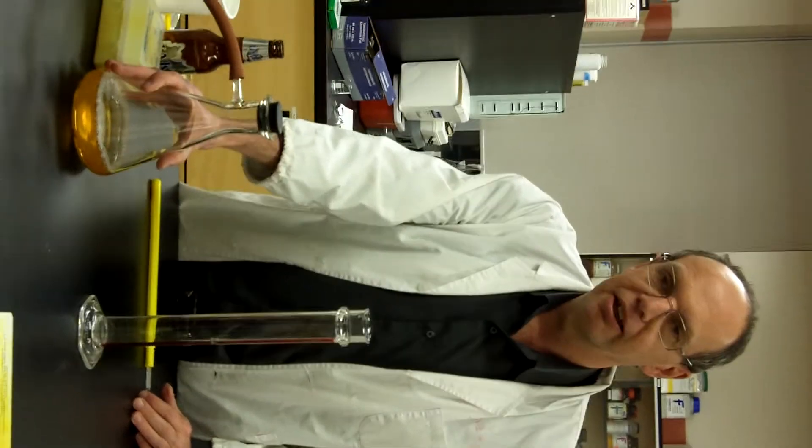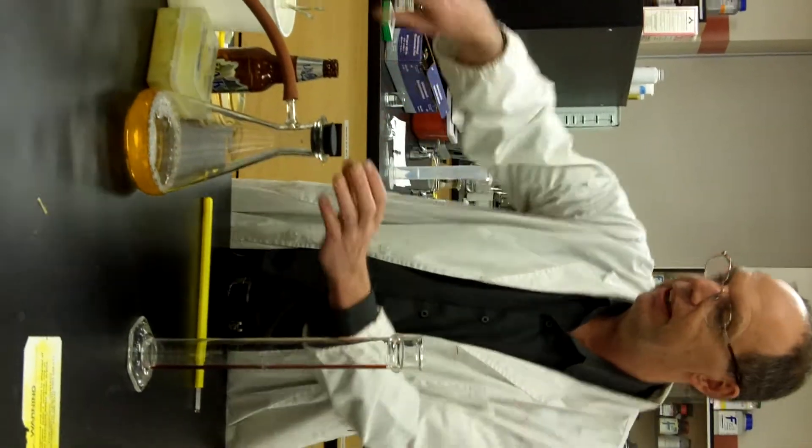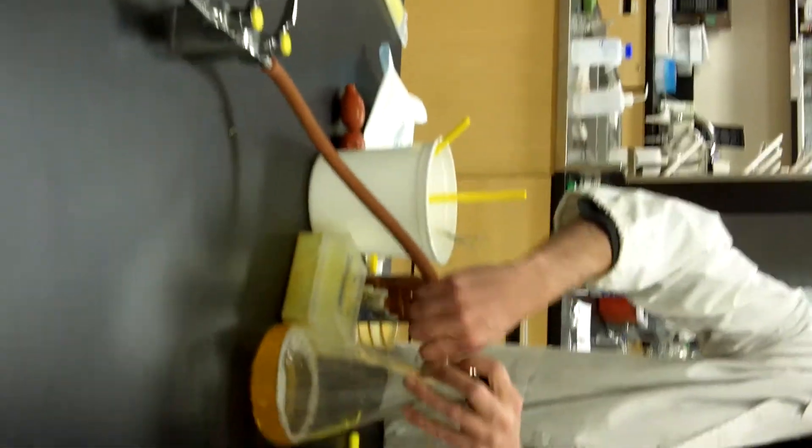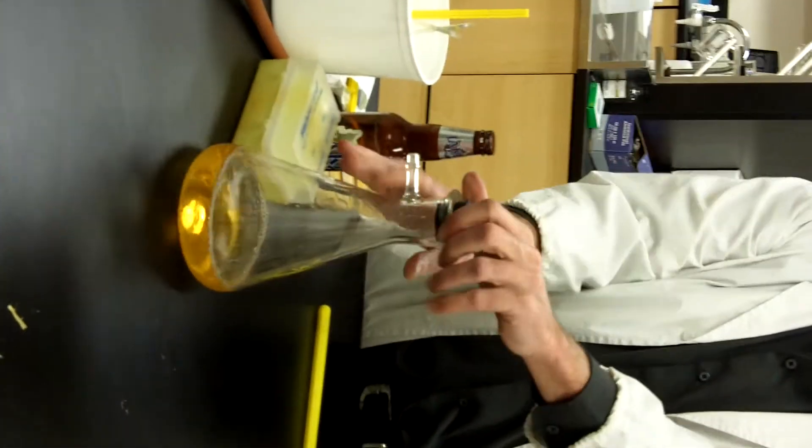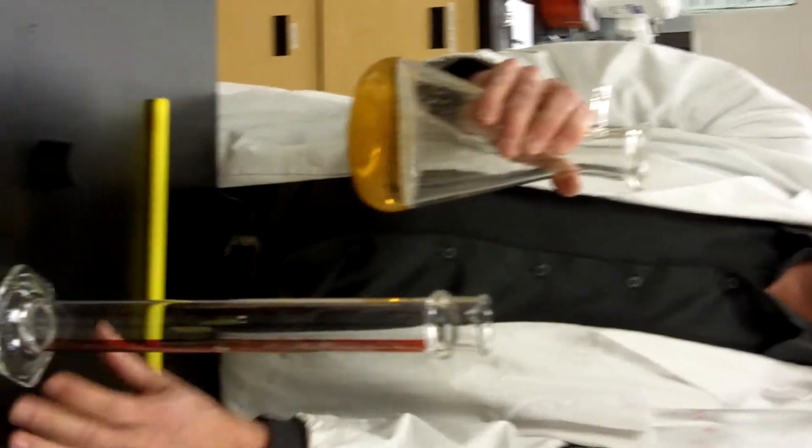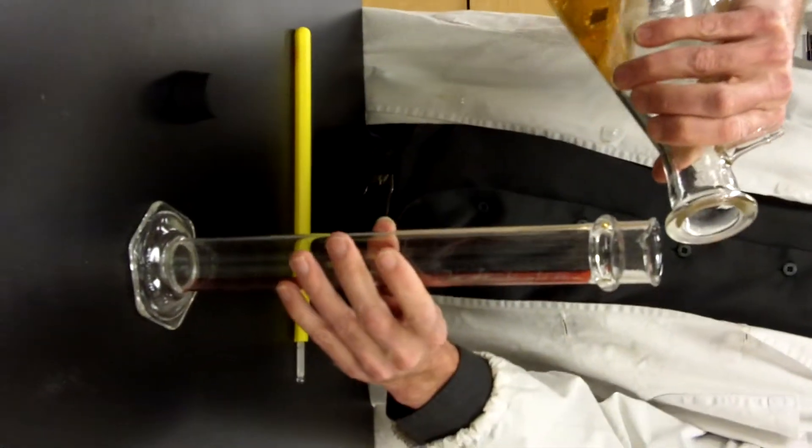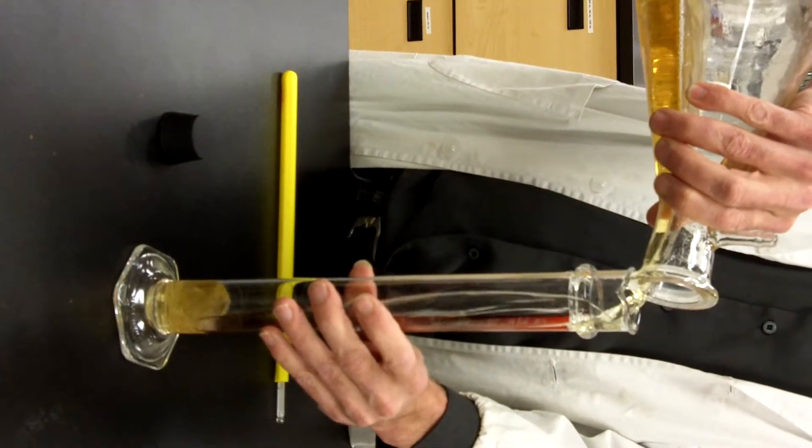OK, so once the beer has been degassed, we can take it off the vacuum. What we're going to do first is measure the specific gravity, or more precisely the plateau. So for this we pour the beer into a measuring cylinder.